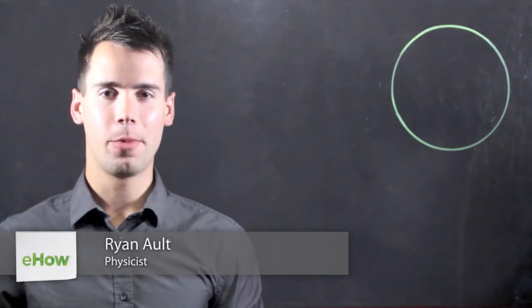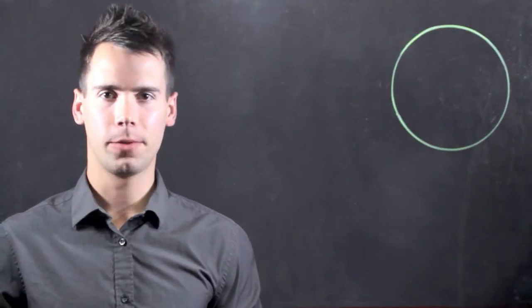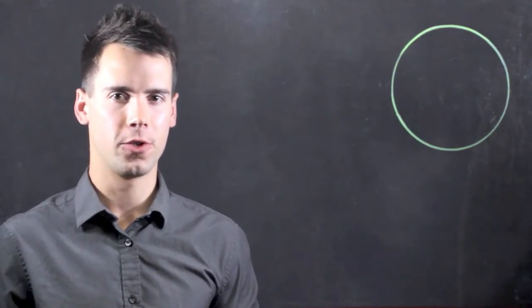Hi, I'm Ryan Ault. I'm a physicist and this is What is a Vertex in Physics? Now, in physics we can describe a vertex by an interaction point between two particles in three-dimensional space.